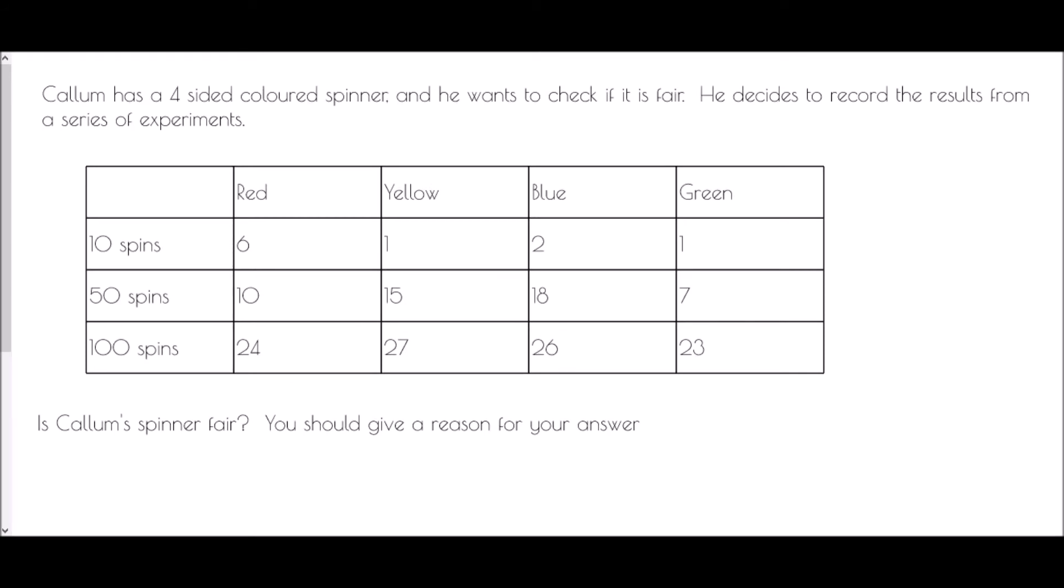And finally, we're told that Callum has a four-sided colored spinner and he wants to check if it is fair. He decides to record the results from a series of experiments. So he started off by just spinning that spinner 10 times, and in the 10 spins he got 6 reds, 1 yellow, 2 blues, and 1 green.